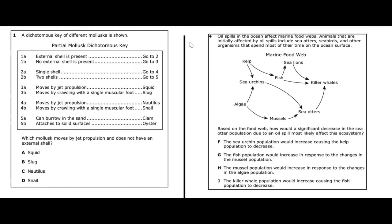A dichotomous key of different mollusks is shown — a partial mollusk dichotomous key. Which mollusk moves by jet propulsion and does not have an external shell? In a dichotomous key you always start at the beginning. We have two choices: external shell is present, or no external shell is present. The question tells us no external shell, so we go to step three.